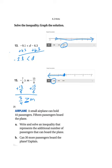All right, next I'm going to solve number 20. This is the one with the airplane. It says a small airplane can hold 44 passengers. 15 passengers board the plane. Write and solve an inequality that represents the additional number of passengers that can still board the plane. So I think I'll use P as my number of passengers. So how many people are on the plane is 15 plus however many more I'm adding, which I don't know how many that is. But all of those people combined needs to be less than or equal to 44.